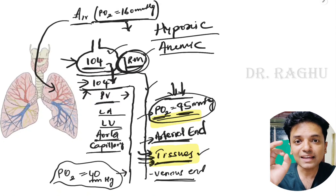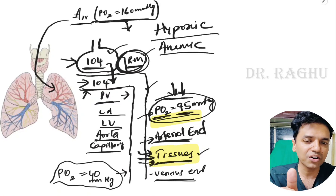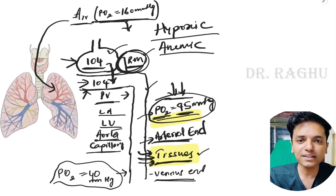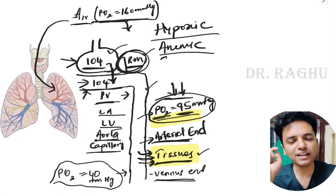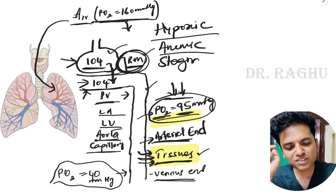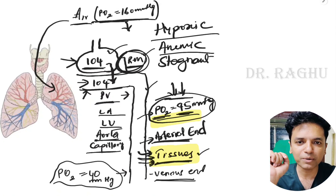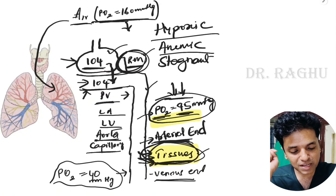The third reason is sluggishness of blood movement. The arterial pO2 is normal, hemoglobin content is normal, but blood flow to the tissues is reduced. Such hypoxia is called stagnant hypoxia, also known as ischemic hypoxia.